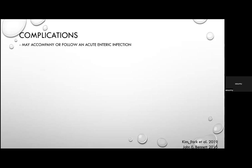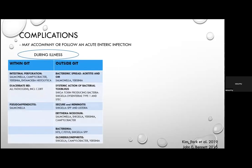Complications of diarrhoea can be divided into those occurring during the acute infection and those following it. During illness, intra-GIT complications include intestinal perforation — caused by Salmonella, Campylobacter, Yersinia, Entamoeba histolytica — exacerbation or first presentation of inflammatory bowel disease, and pseudo-appendicitis as a complication of Salmonella.